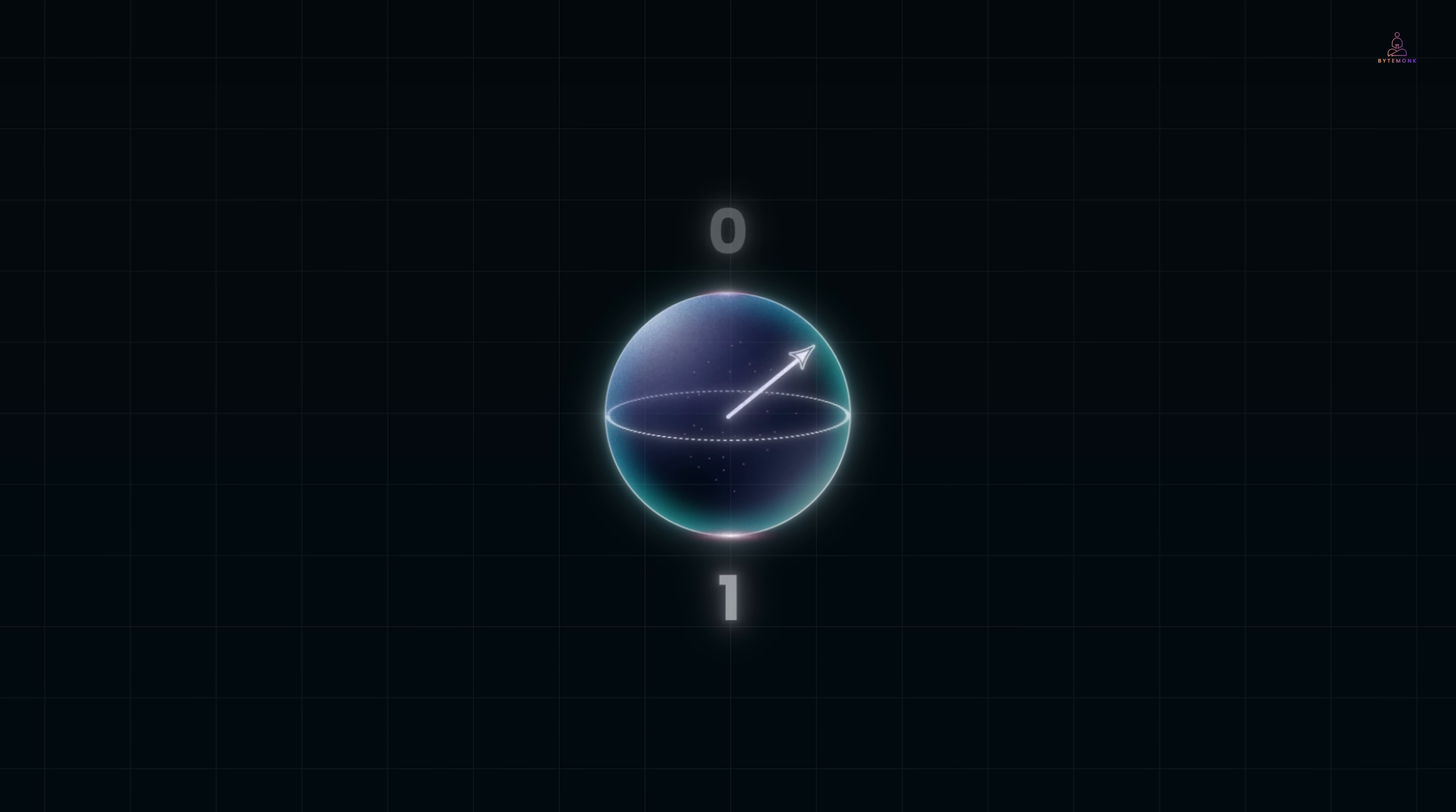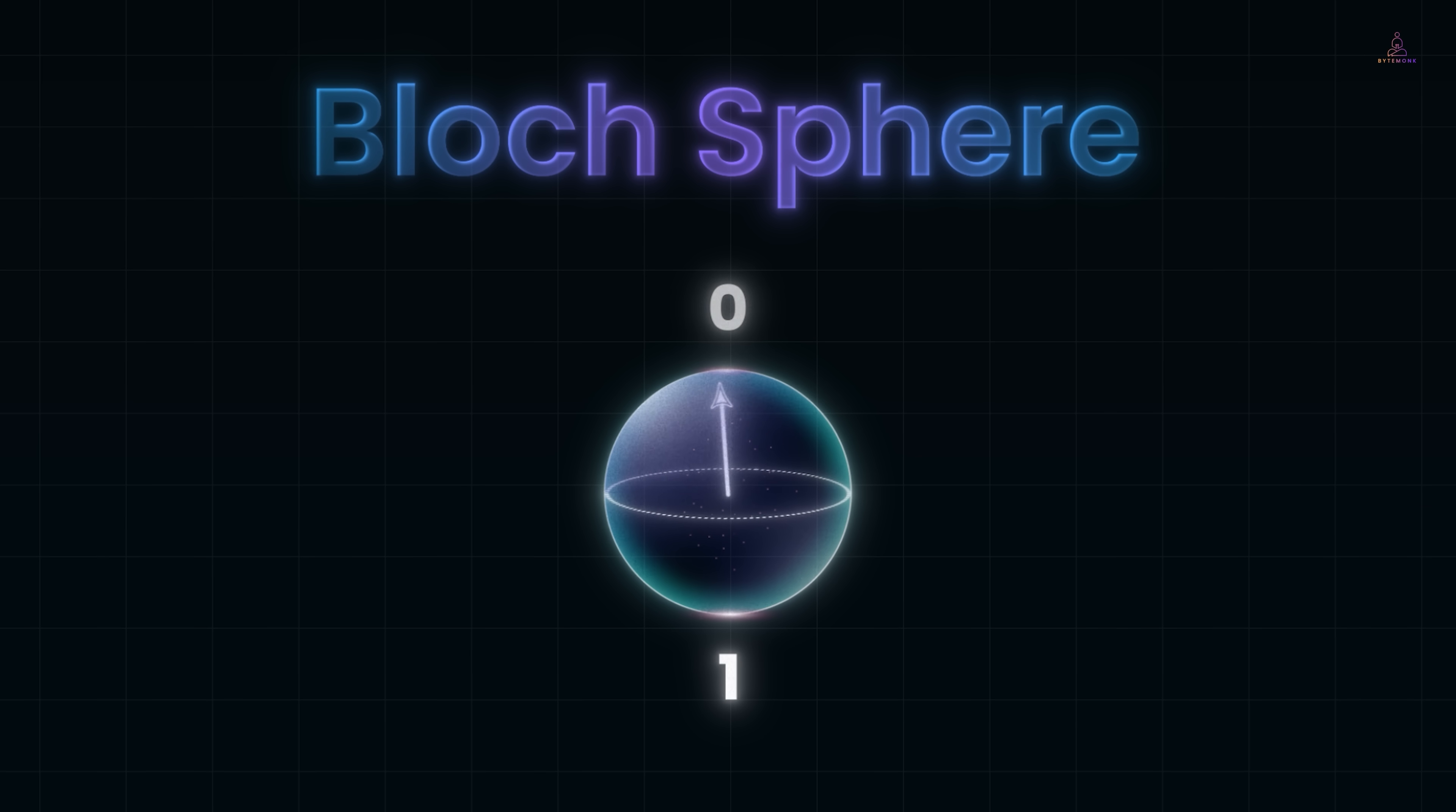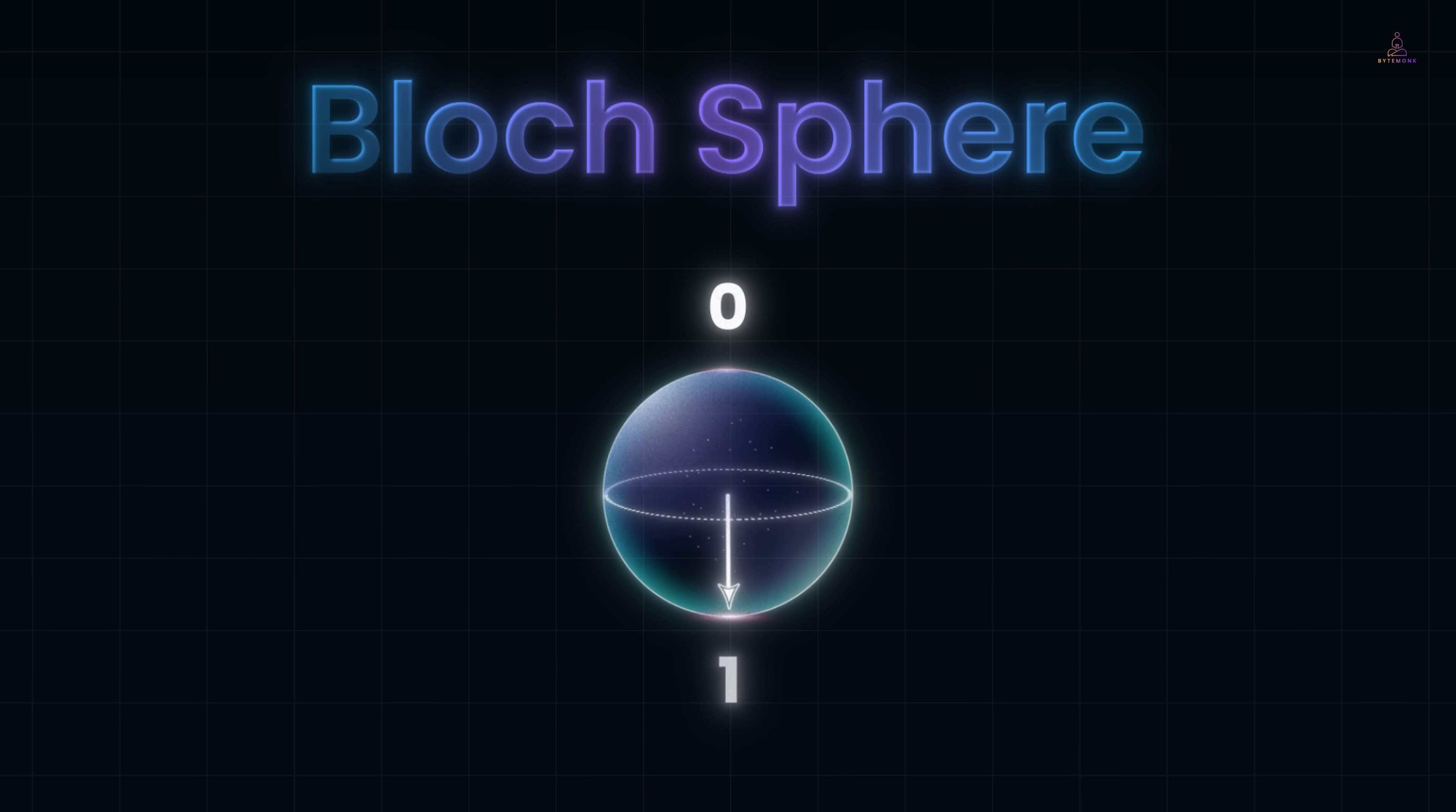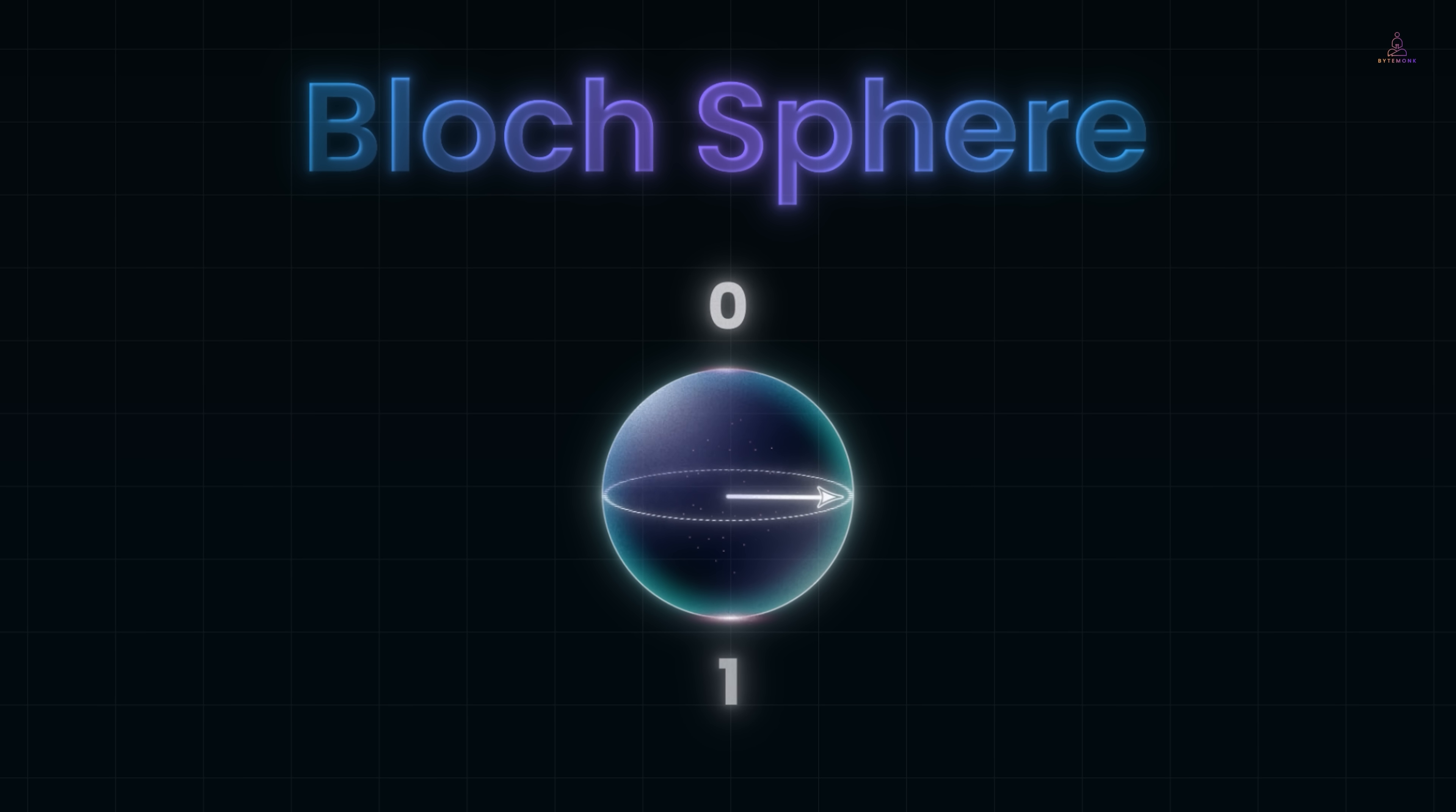Now when we talk about a qubit state, physicists often draw something called the Bloch sphere. It's just a globe we use as a map. At the very top of the globe is the pure zero state. At the very bottom is the pure one state. A classical bit could only sit at one of these poles, but a qubit is different. It can point anywhere on the globe. Tilt it a little toward the bottom and you're saying it's mostly one with a chance of zero. Tilt it toward the equator and you're saying it's a perfect 50-50 mix.